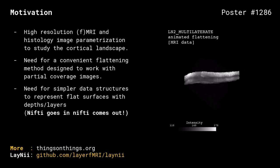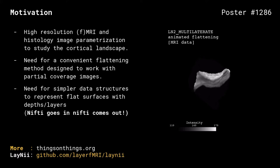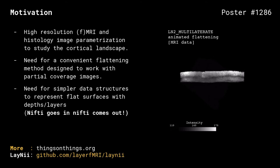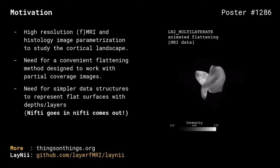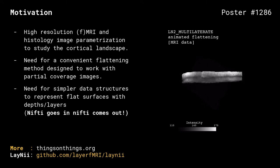First, the need for studying the cortical landscape. Second, the need for a convenient flattening method designed to work with partial coverage images. Third, the need for simpler data structures to represent flat surfaces with depths or layers. On the right-hand side, you can see a chunk of the brain being flattened as an animation.